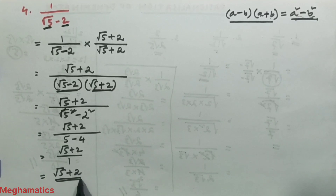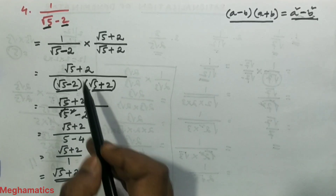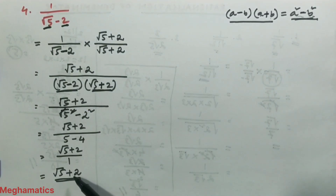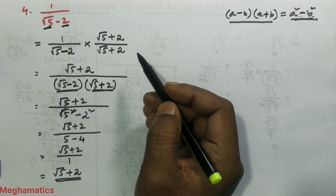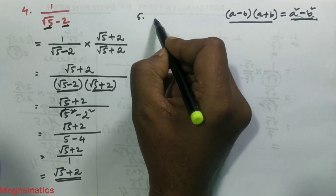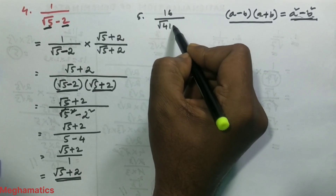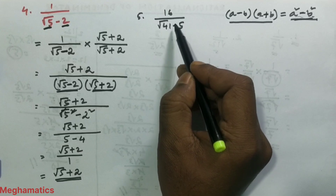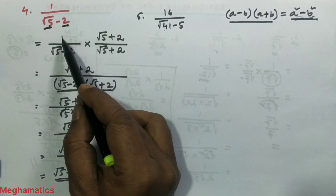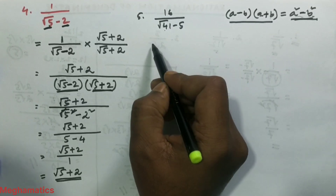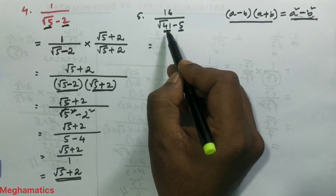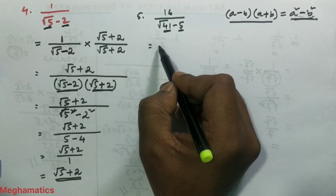This is the way we solve fractions with a root over number in the denominator — we rationalize so that there is no root in the denominator. Now in the next question, suppose we have 16 by root over 41 minus 5. The denominator has two terms and both 41 and 5 are prime numbers, so we start direct rationalization.